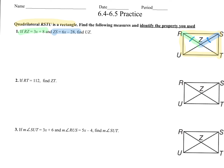The other property we have to remember is that not only is RT congruent to SU, these diagonals bisect each other. So we have congruent parts. That's our strategy, because RZ is congruent to ZS. Now we substitute in what we know: RZ is 3X plus 8, and that's equal to 6X minus 28.